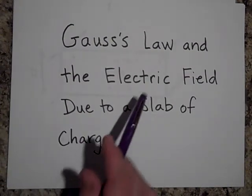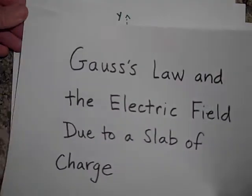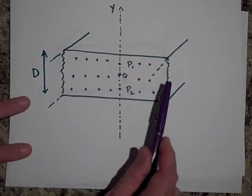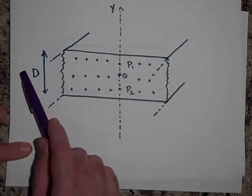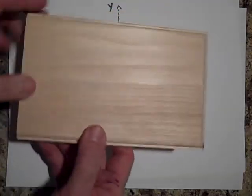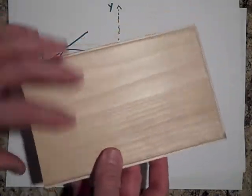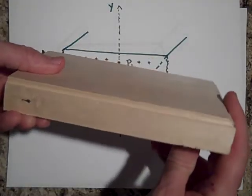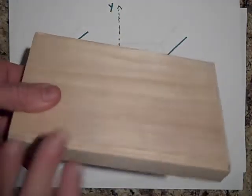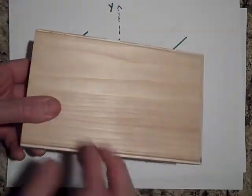I would like to tell you about how Gauss's law can be used to find the electric field due to a slab of charge. That's a cross-section of a slab that goes a long way in all directions. If you think of a slab or a piece of wood that's charged with charges embedded throughout it - this piece of wood goes on a long way in all dimensions except the direction of the flat surface, where it actually stops.